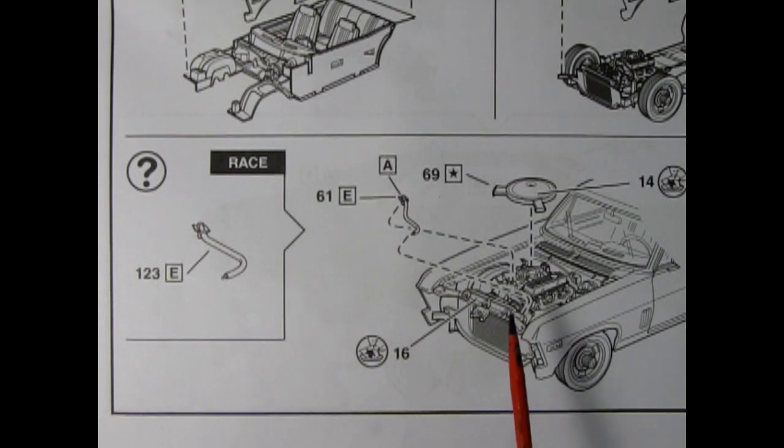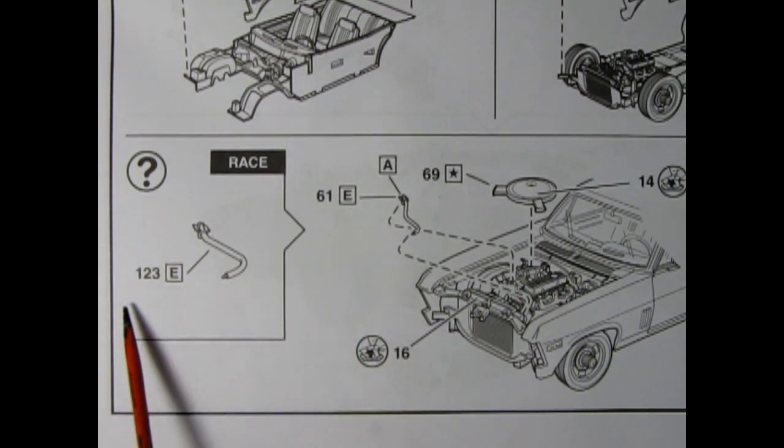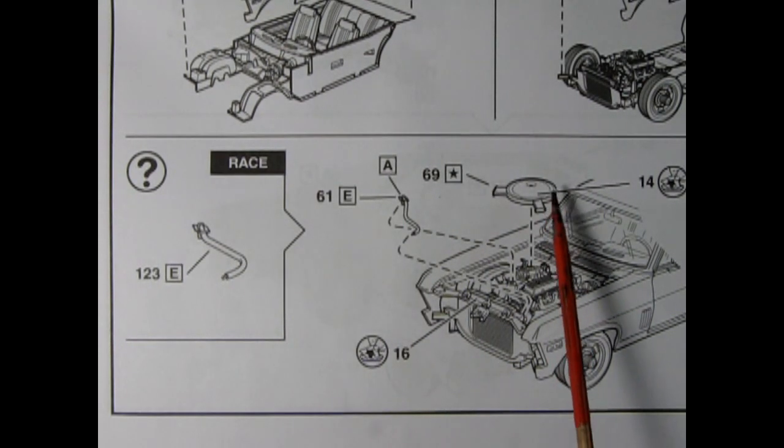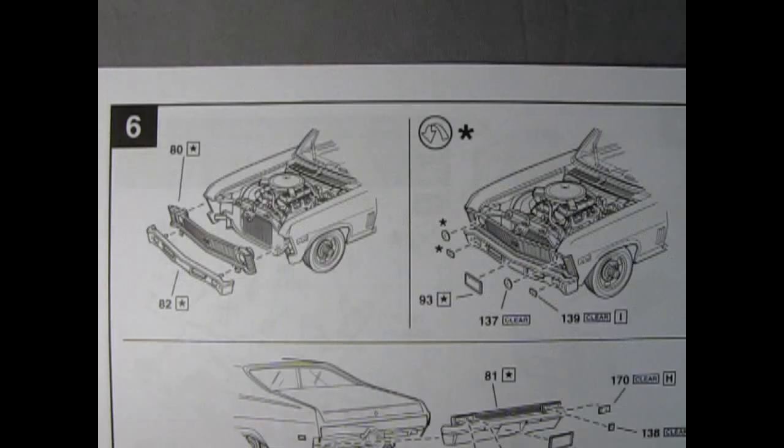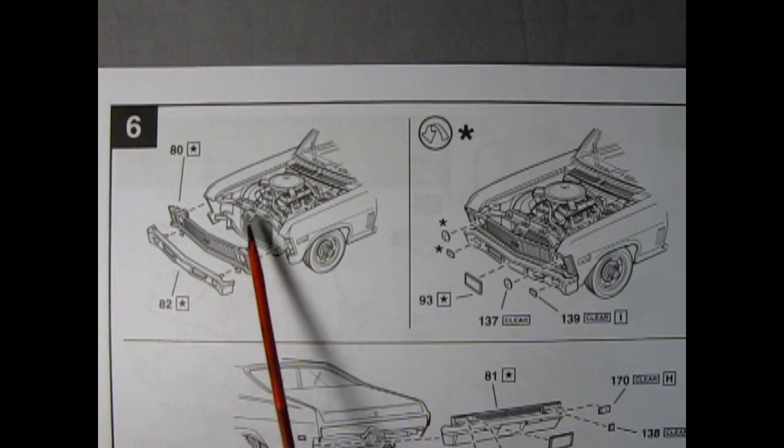I made a little mistake in step 5. It was the lower radiator hose that glued on first. Here we have our upper radiator hose. There's actually two different hoses: number 61 is for the stock version and number 123 is for the race version. Then after you install all that, drop in your air cleaner on top of your carburetors.